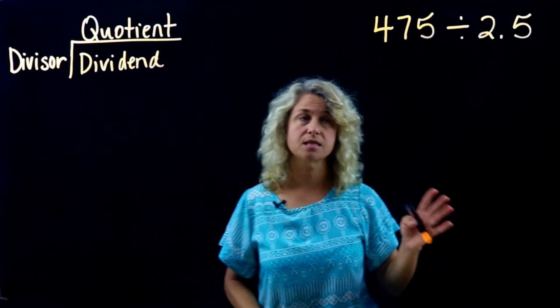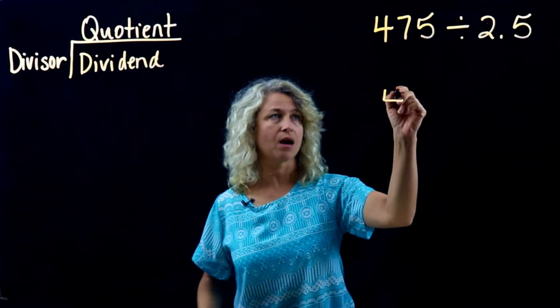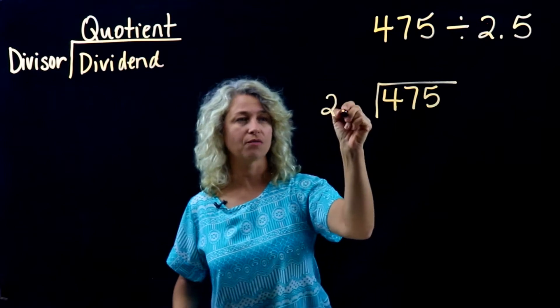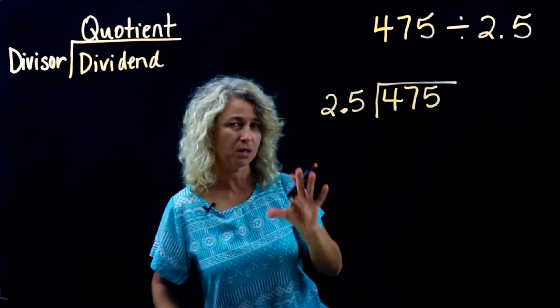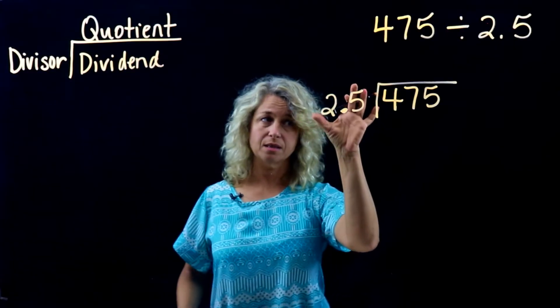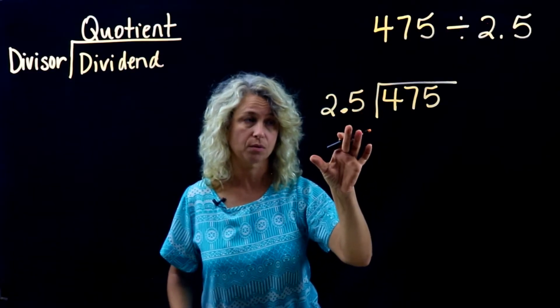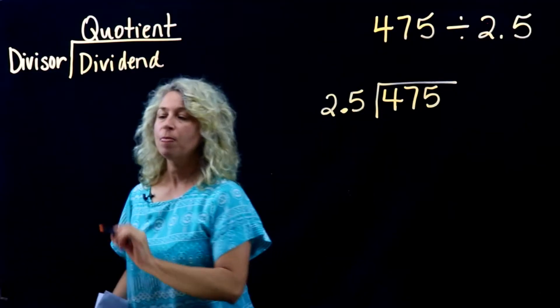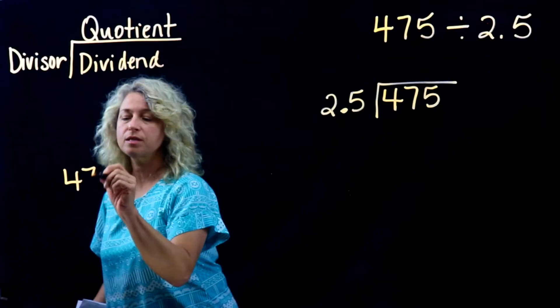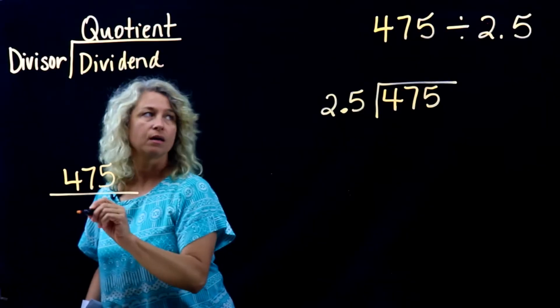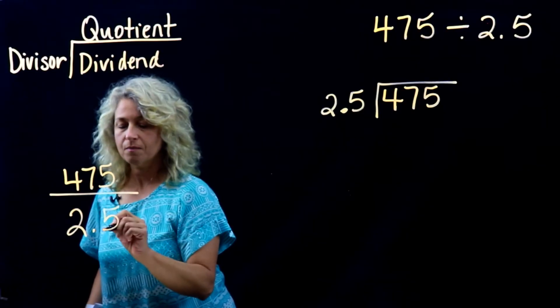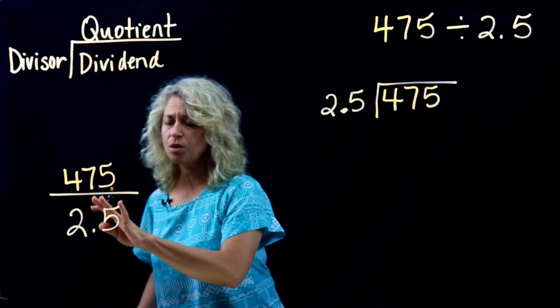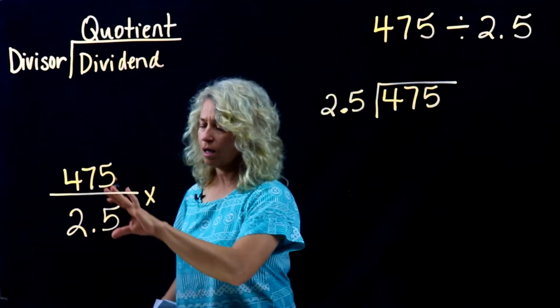Let's take a look at this example. Let's write it in the house: four hundred seventy-five divided by two point five. Now you may have heard me mention earlier this divisor needs to be a whole number, and so we've got to think about how can we make it a whole number. So let's write this as a fraction: four seventy-five over two point five, because this means the same thing as division.